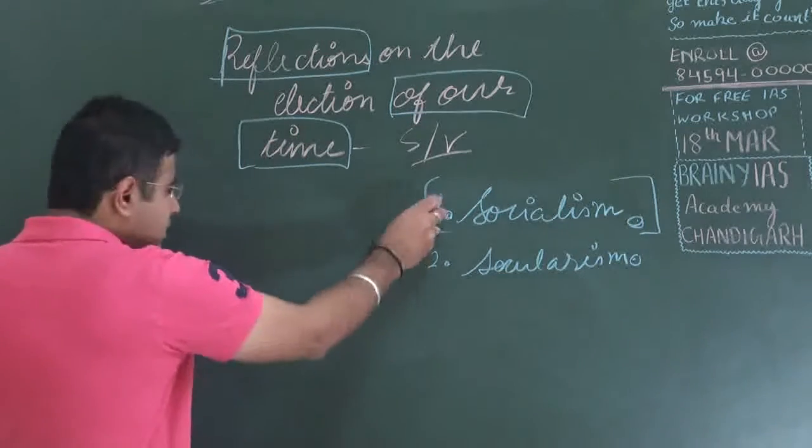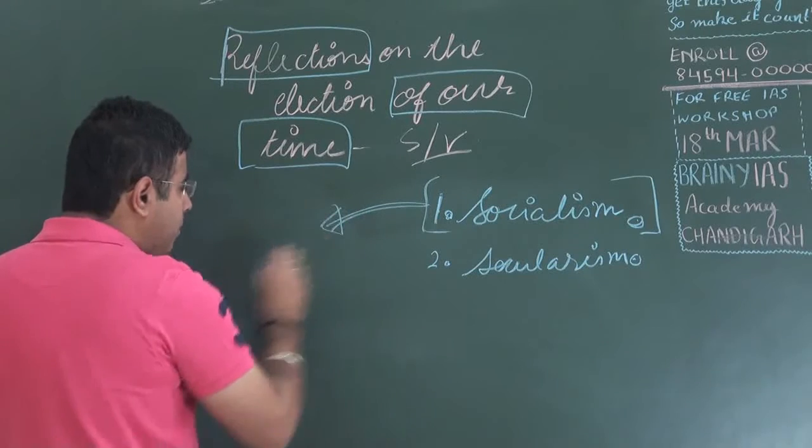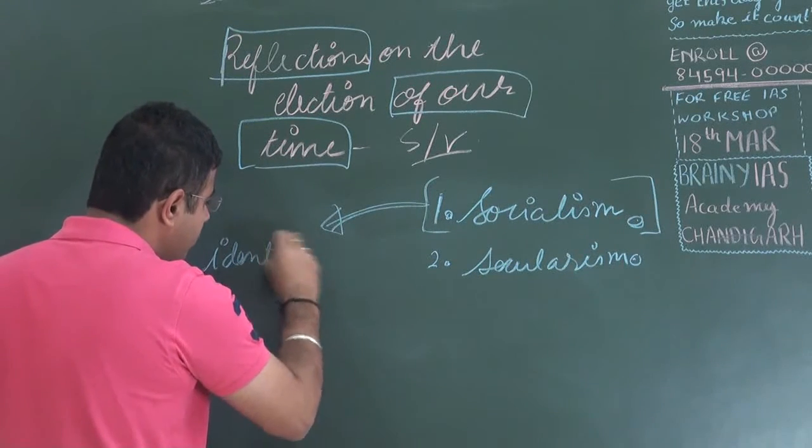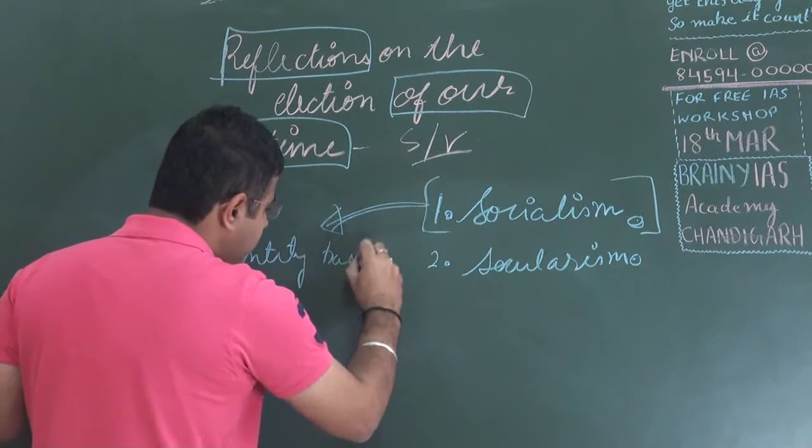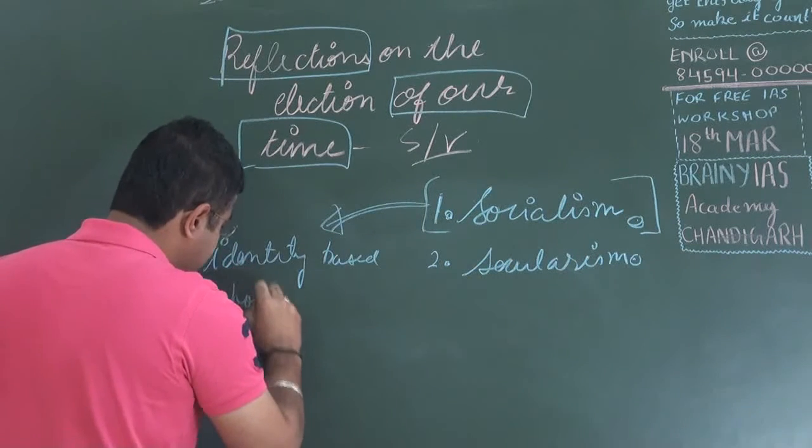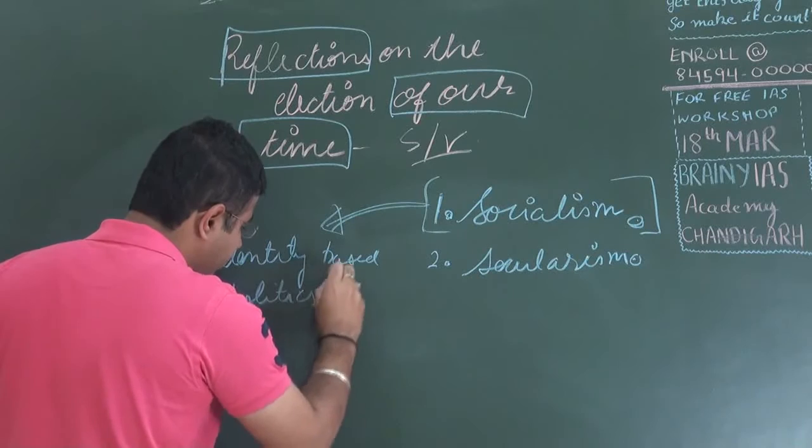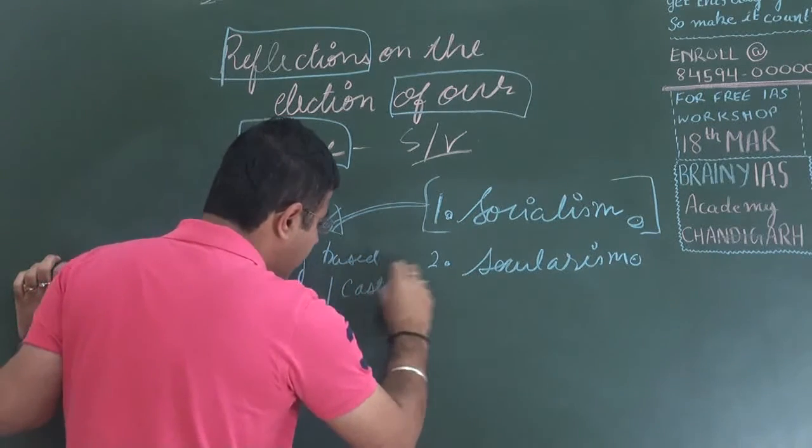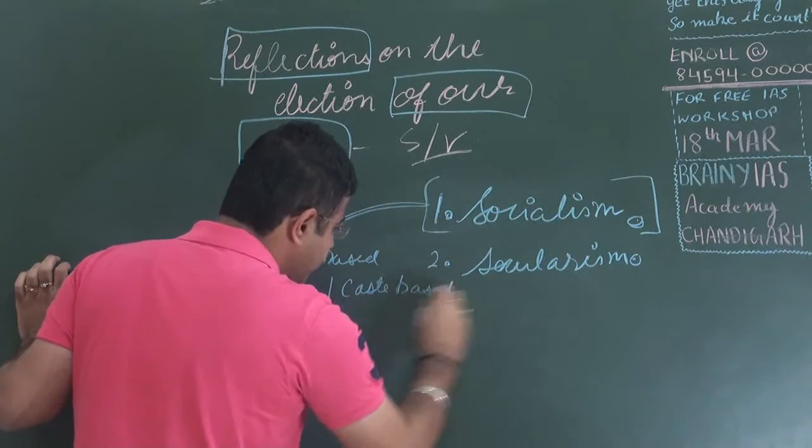Socialism was used as a shield to promote identity based politics, to promote caste based politics.